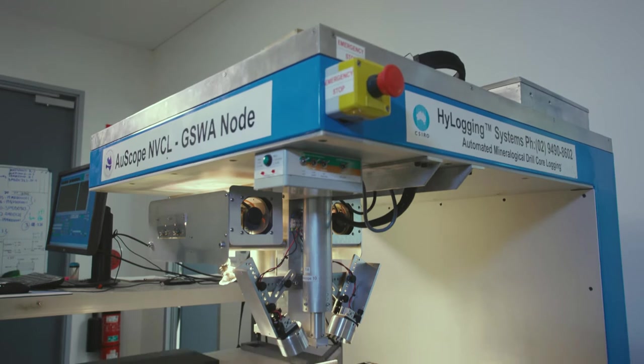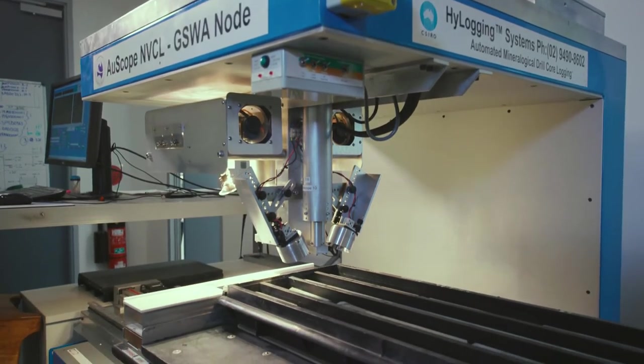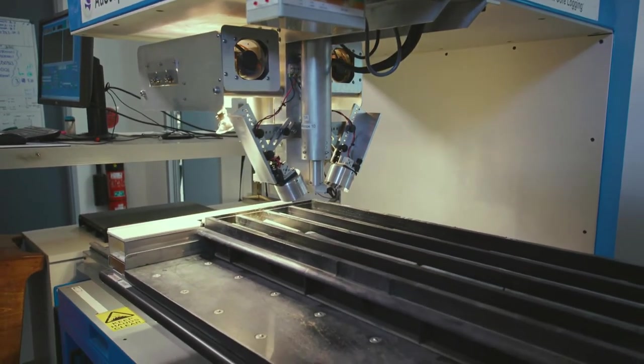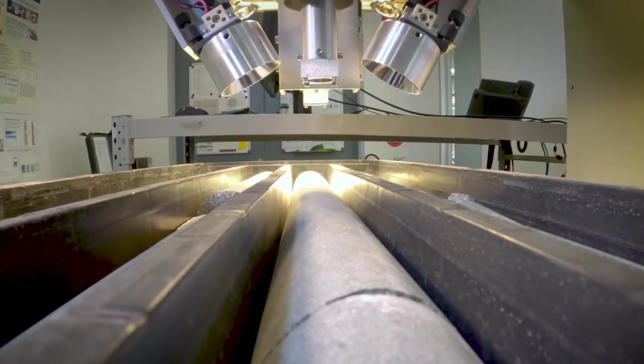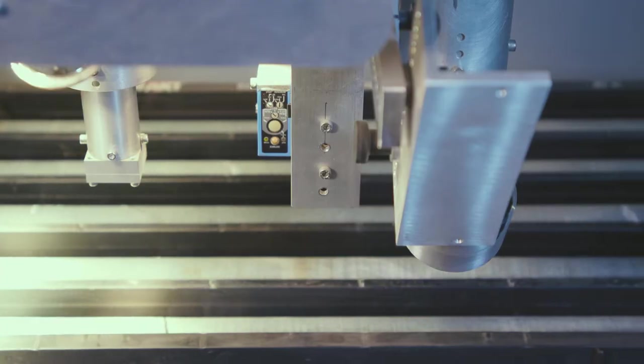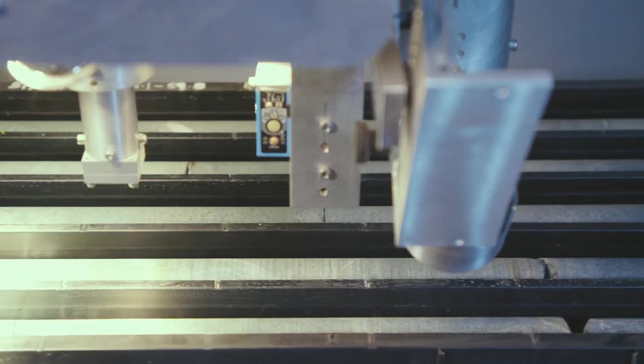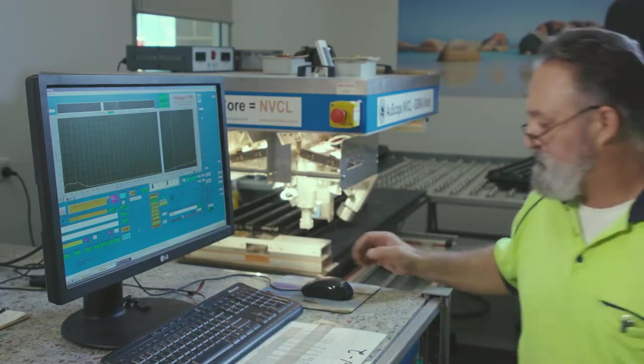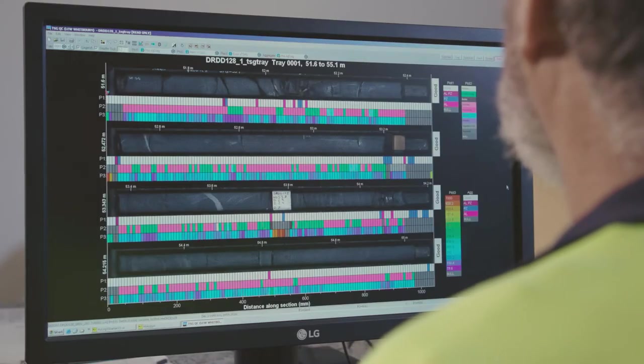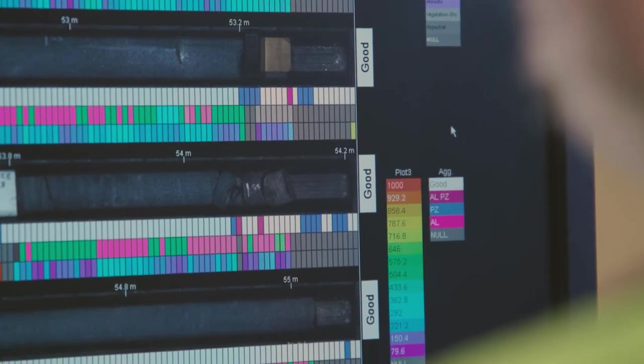The HyLogger is the system that sits behind the NVCL that creates an image of the center of a piece of drill core. It creates an optical image as well as ultraviolet and infrared portions of the spectra, which gives us a huge amount of information about the mineralogy involved, and allows us to understand how they formed.